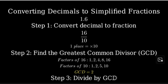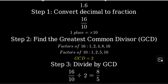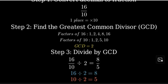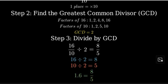Now, let's divide both the numerator and denominator by our greatest common divisor of 2. 16 divided by 2 is 8, and 10 divided by 2 is 5. Therefore, 1.6 simplified as a fraction is 8 fifths.